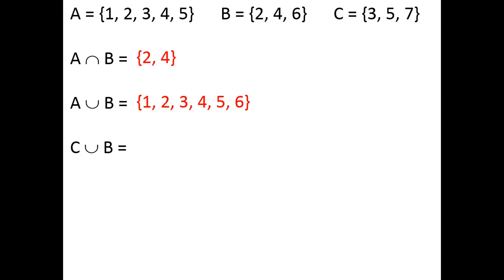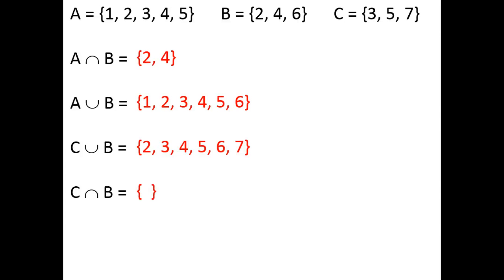For C union B, we dump everything in C and B together to get {2, 3, 4, 5, 6, 7}. For C intersect B, we need a set containing all elements C and B have in common. If you look carefully, C and B have nothing in common, so the intersection of C and B is the empty set.